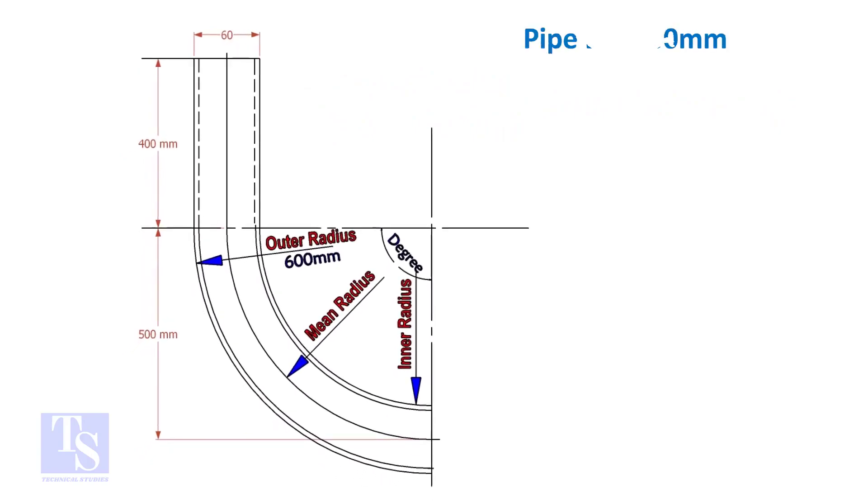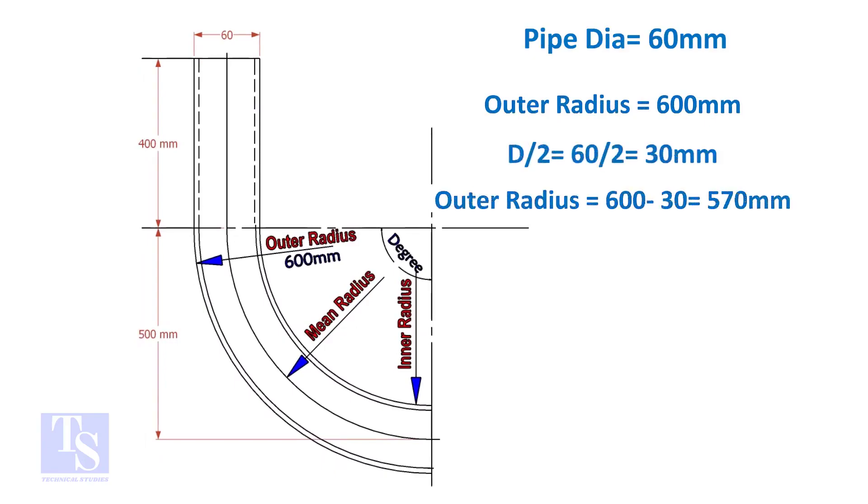Assume the diameter of the bend is 60 mm and the outer radius is 600 mm, then the mean radius is 600 minus half the diameter of the pipe, which is equal to 570 mm.